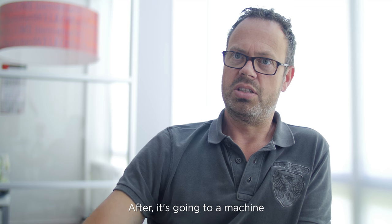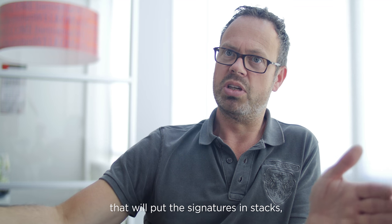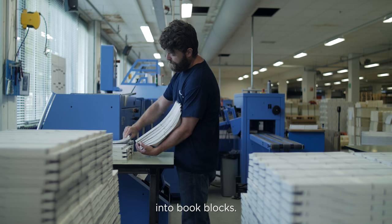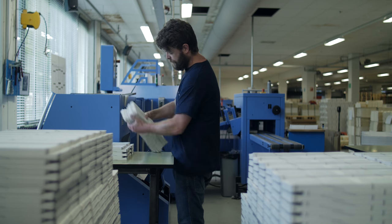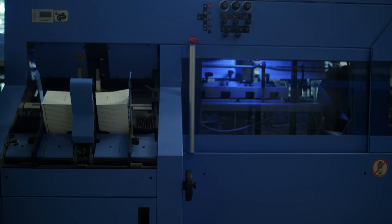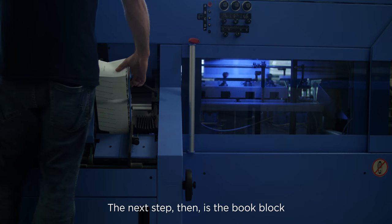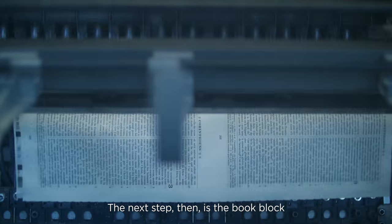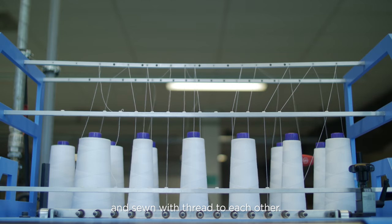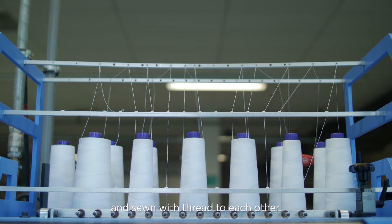After it's going to a machine, we put the signatures in stacks. It's a book block. The next step then is the book block is going on the sewing machine, and it's sewn with a thread to each other.